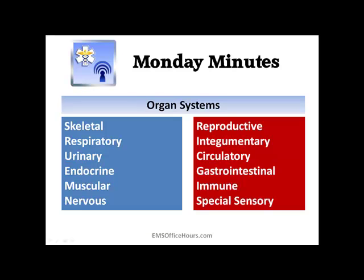What are some of the organ systems? We've got our skeletal, respiratory, urinary, reproductive, the integumentary — your skin — your circulatory system, gastrointestinal system, endocrine, muscular, nervous, immune, and of course things like special sensory-type systems.